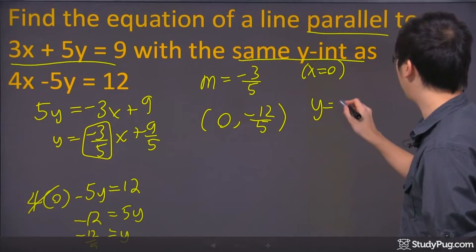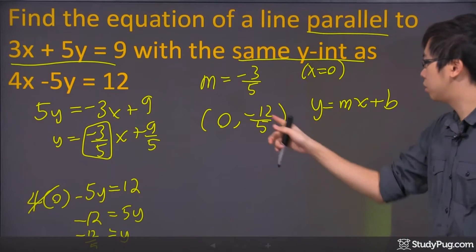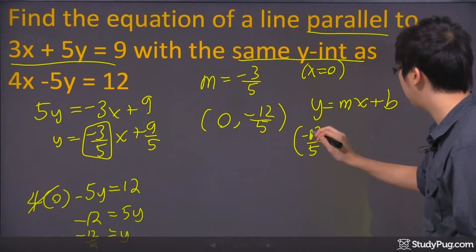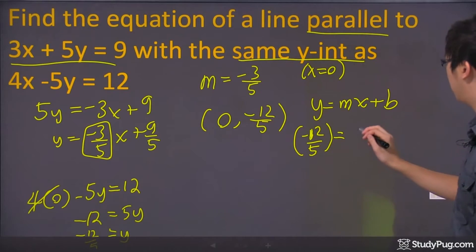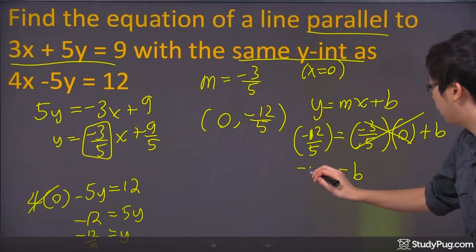First of all, we apply the y equals mx plus b form. Let's plug in the numbers that we know. There's your y right there. That's my y right there. And the slope is going to be negative 3 over 5 times the x, which is a 0, and plus the b. Now, realizing I'm multiplying by 0 here, this part is cancelled. The b would just equal negative 12 over 5.